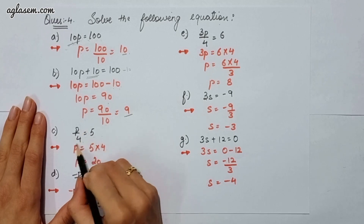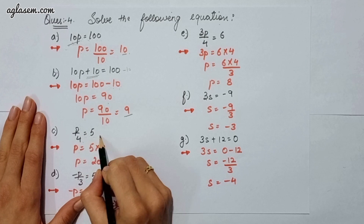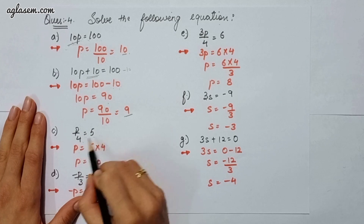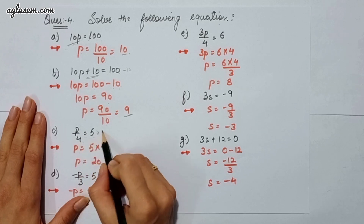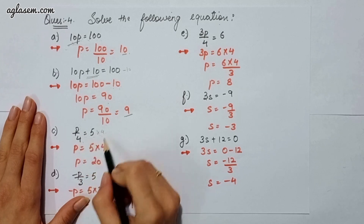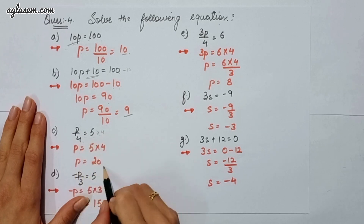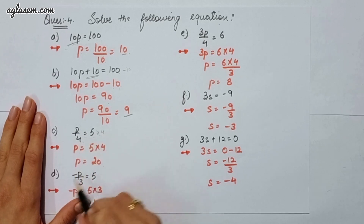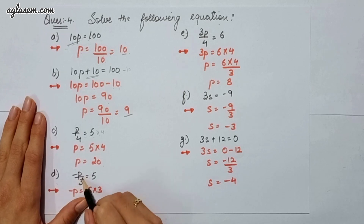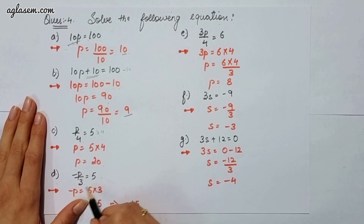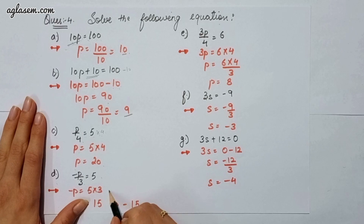The d part says minus p divided by 3 is equal to 5. So minus p is equal to 5 times 3, which gives 15.